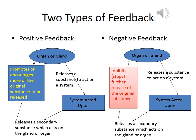To conclude our lesson today, let's compare two types of feedback that are possible in the body. We have already mentioned negative feedback. Negative feedback begins with an organ releasing a substance to act on a system. The system is acted upon by the substance and in its turn it releases a secondary substance which acts on the gland or the organ. In this case, it inhibits the further production of the primary substance or the original substance.